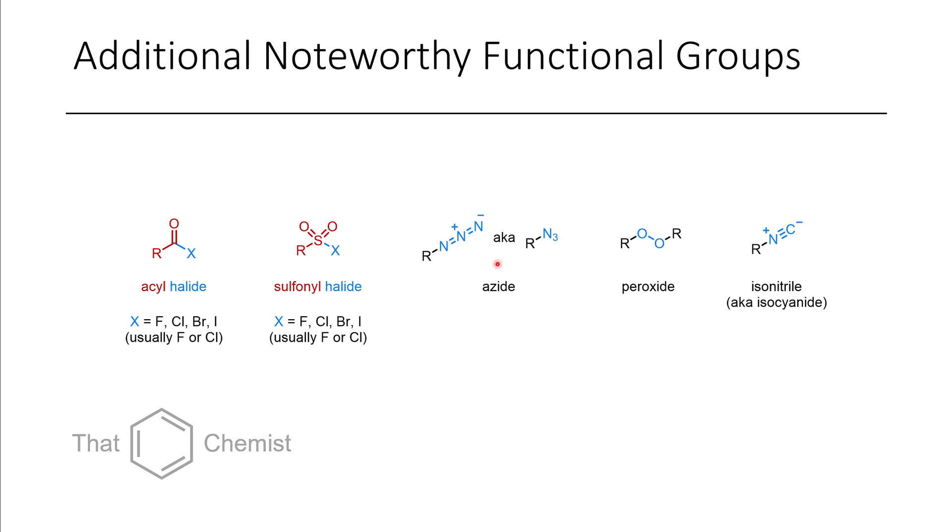Another common group that you see is an azide group. So, we have an R group connected to three nitrogens. These tend to be really reactive and sometimes very explosive. Peroxides are also an interesting functional group. Here, we have two oxygens connected to two carbons. This would be a peroxide. If one of the R groups is also a hydrogen instead of a carbon, this would also still be a peroxide.